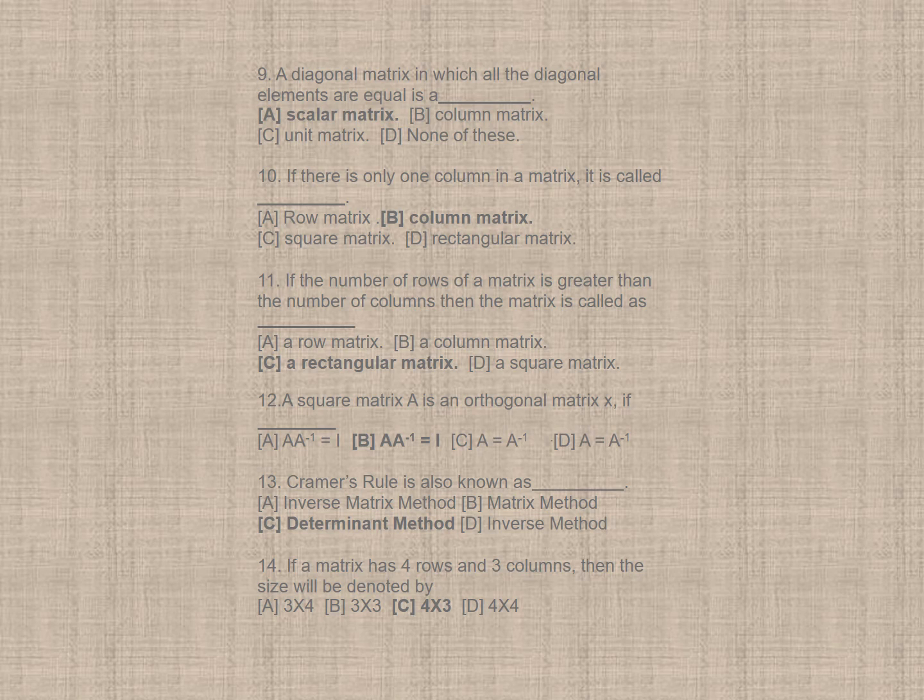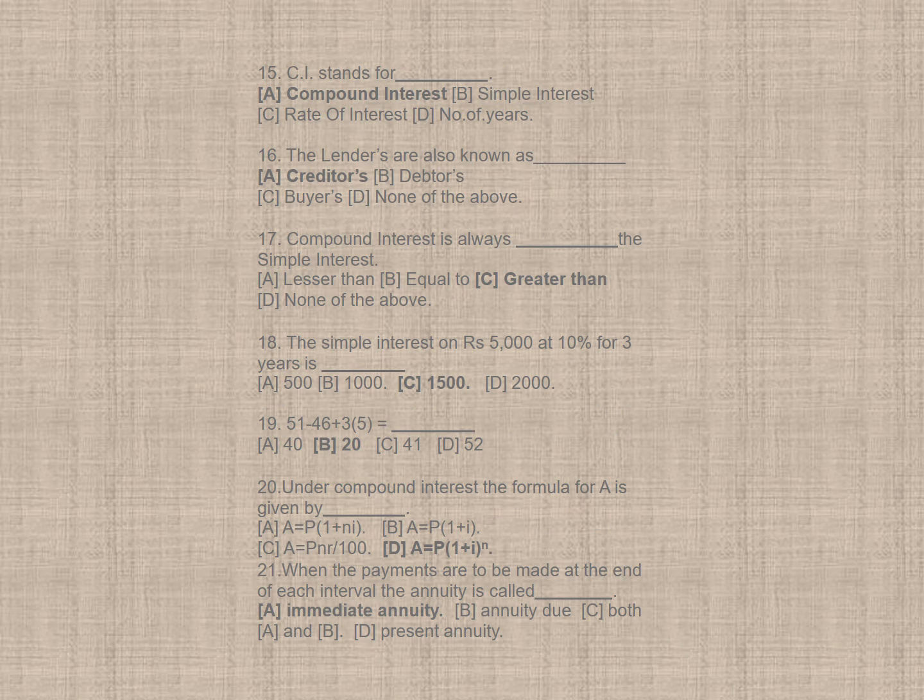Question 14. If a matrix has 4 rows and 3 columns, then it is 4 cross 3 matrix, option C. Question 15. CI stands for compounded interest, correct option is A. Question 16. The lenders are also known as, here correct option is A, creditors.